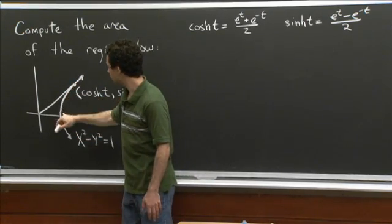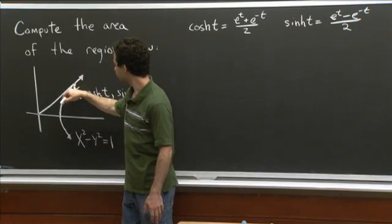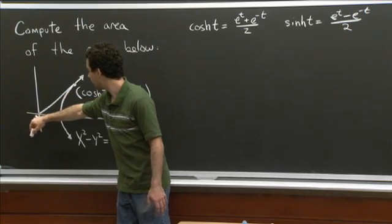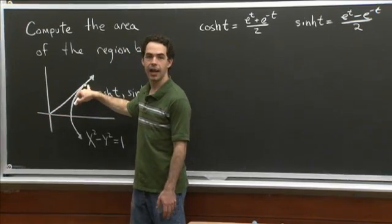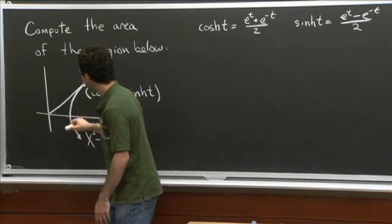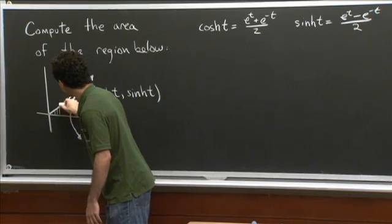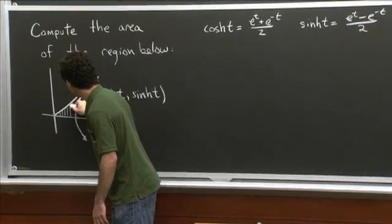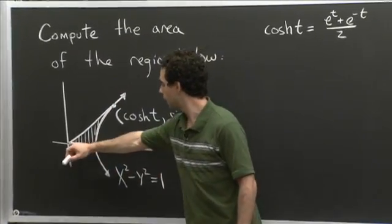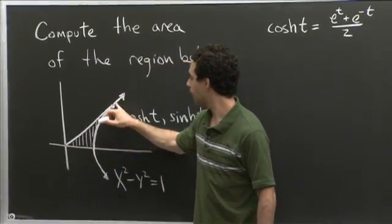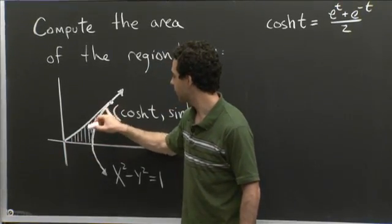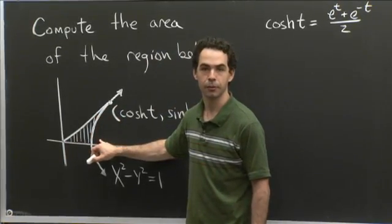So I've got the hyperbola and that point. I've drawn a straight line between the origin and that point. The region I want you to find the area of is this region here: it's below that line segment, above the x-axis, and to the left of this branch of the hyperbola.